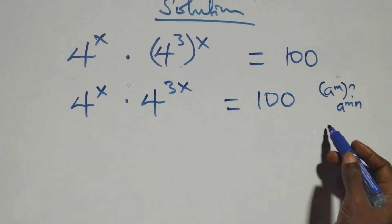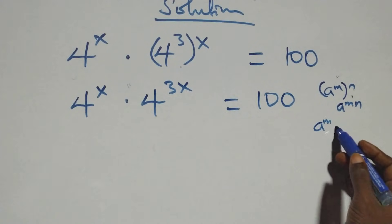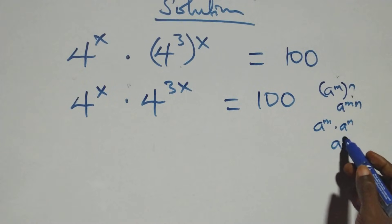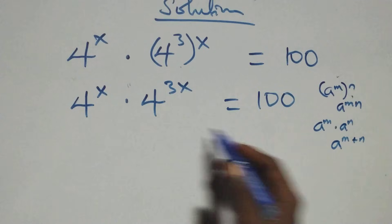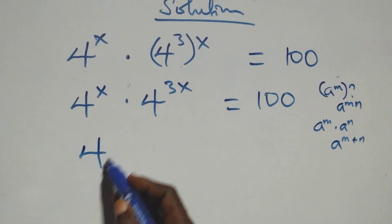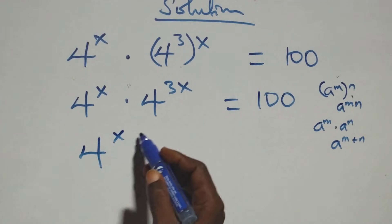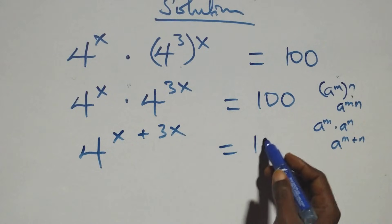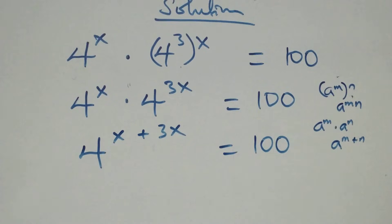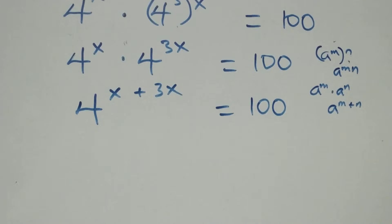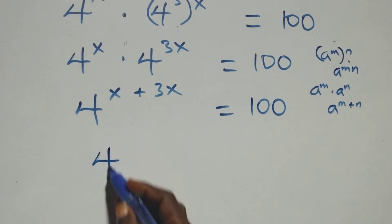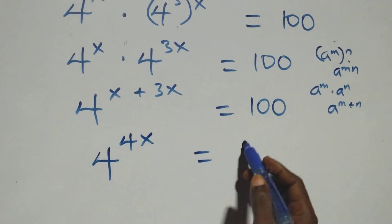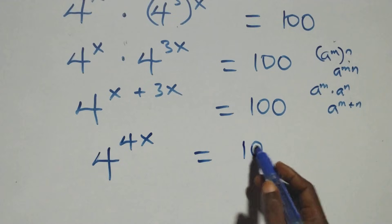This also follows the rule: when we have a raised to power m times a raised to power n, this is the same as a raised to power m plus n. So here we have 4 raised to power x plus 3x, equals to 100, which implies 4 raised to power 4x equals to 100.